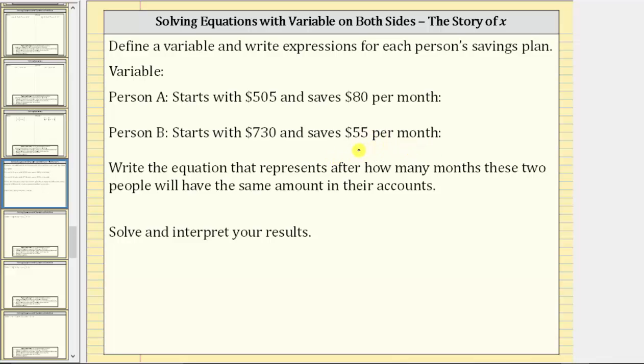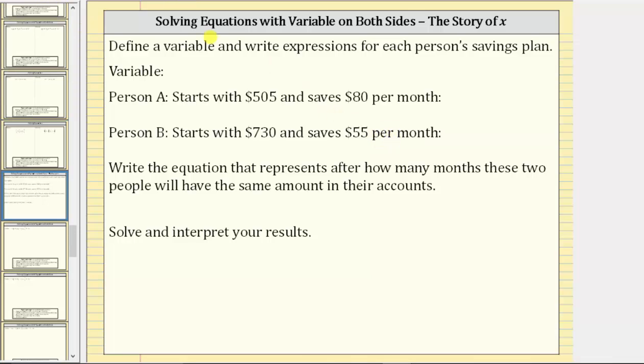The unknown is the number of months, which is what we assign the variable to represent. Let's use the variable M to represent the number of months.